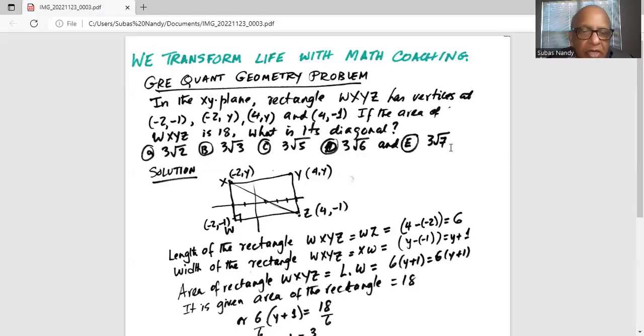And the width of the rectangle is XW. What is the total distance between X and W? It is y minus (-1), or y plus 1.